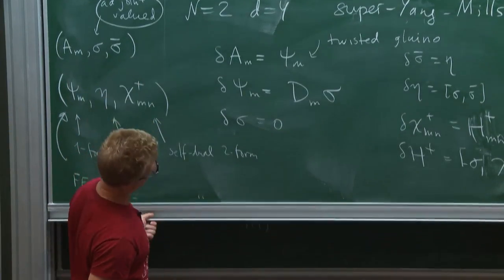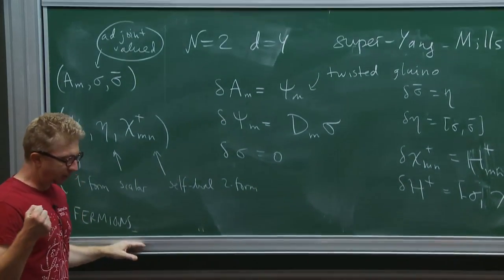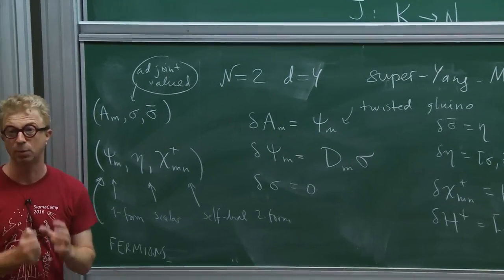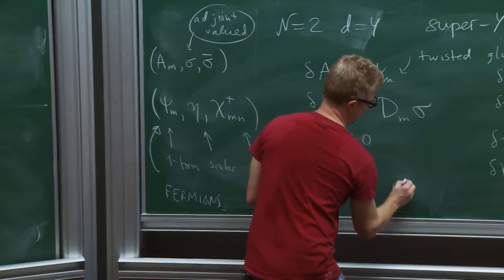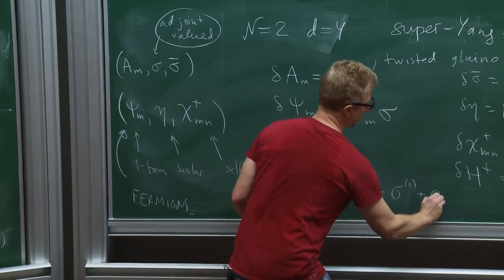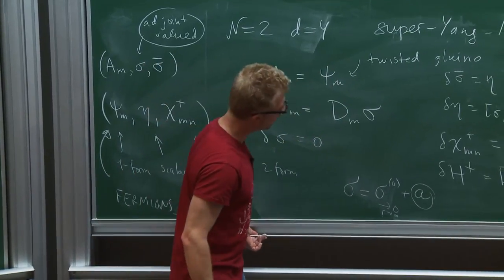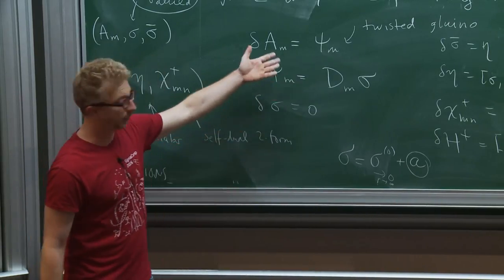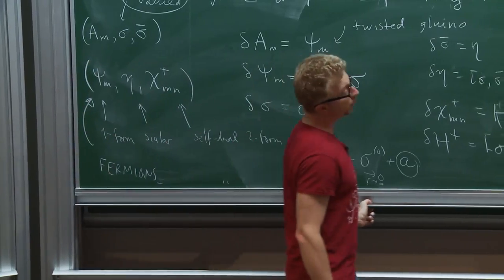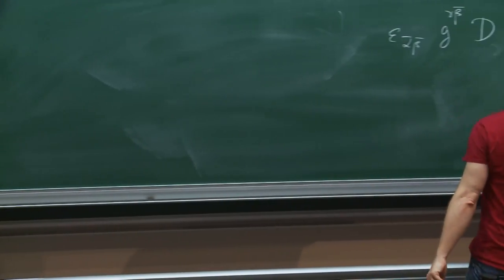Considering the consistency for different choices of supercharge among the eight and requiring consistency fixes the effective action at two derivatives and four fermions entirely in terms of this single prepotential function. To compute it, we design a trick: deform the original theory via the omega deformation so that instead of integrating over the full moduli space of instantons, the integral localizes at fixed points of a symmetry.